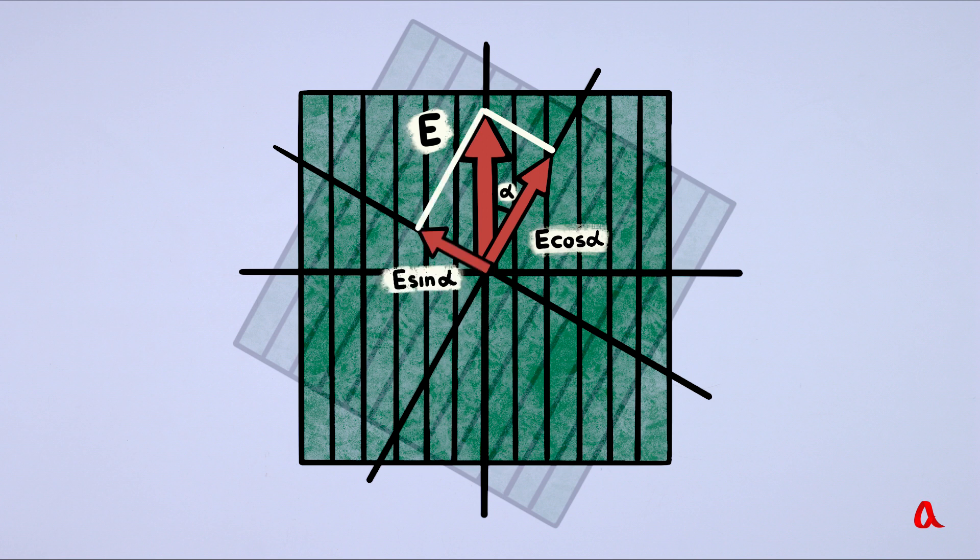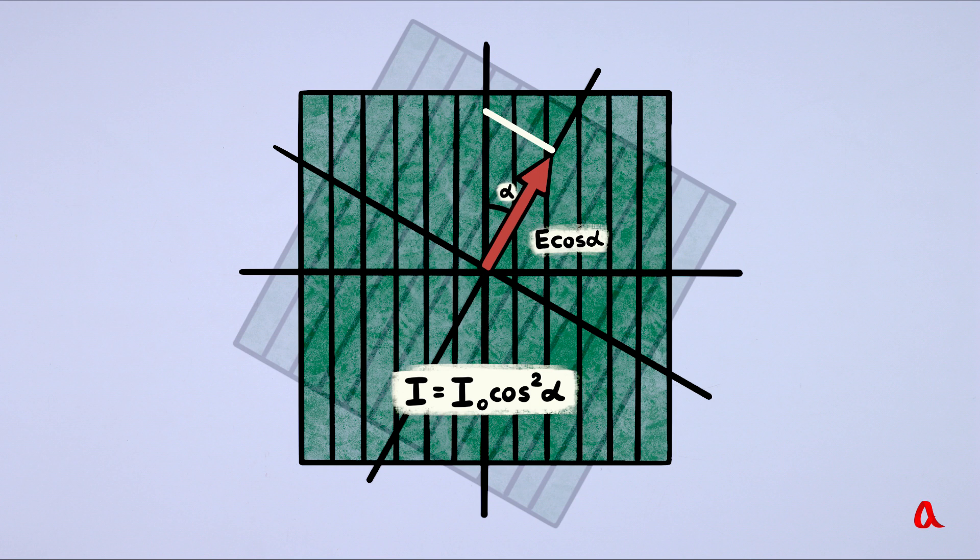The longitudinal component passes through the analyzer but the perpendicular component does not. The light intensity is proportional to the square of the electric field, hence it depends on the angle alpha according to the law i equals i0 multiplied by squared cosine alpha. This relation is called Malus's law.